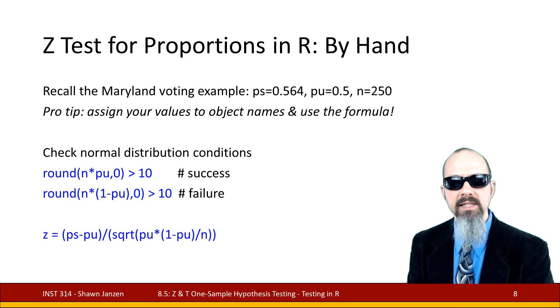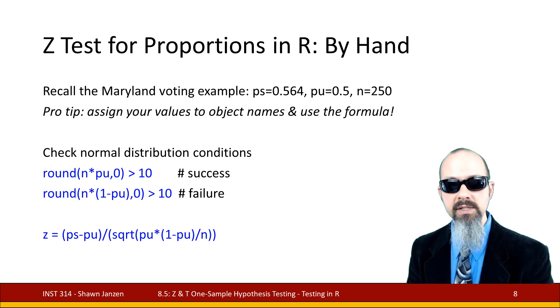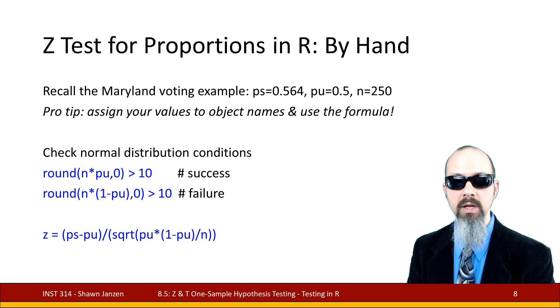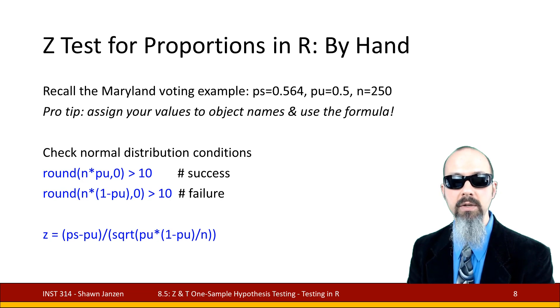When we're doing the z-test for proportions, we're going to have to do our check by hand. In this case, I have p sub s saved as ps at 0.564, I've saved p sub u as pu at 0.5, and I've saved n as 250. Oftentimes, if you want a pro tip, go ahead and save the values from your analysis as objects like ps, pu, and n, and you can reuse them in your formulas. It makes life much easier and accurate in case you make a data entry error.